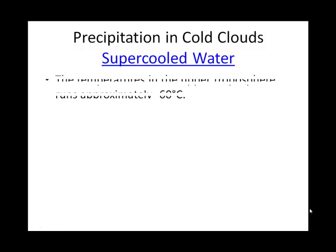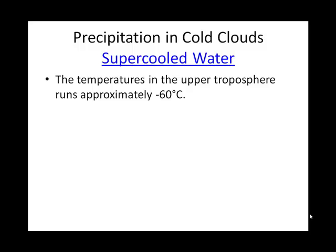We're going to talk about what happens in cold clouds. I differentiate between cold clouds and cool clouds, but at the top of both, we get the formation of ice crystals. Oftentimes, even though precipitation falls as rain at the surface, it starts out as snow — as ice crystals — at upper elevations.